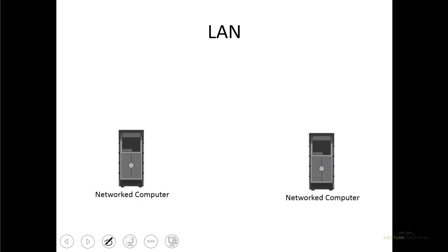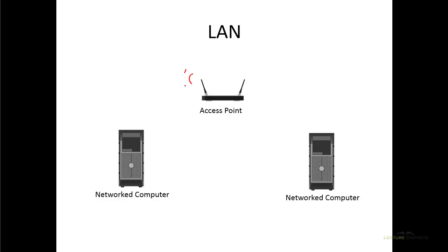We can also introduce wireless instead of using the wired option, using a device called an access point to send data wirelessly. Again, for those at home, your router typically acts as an access point as well. The access point in a business gives us the ability to send data wirelessly from the access point to any wireless-capable device. The standard for local area networks when it comes to wireless is called Wi-Fi, which is typically written as 802.11 followed by a letter depending on the speed and capabilities. That's the technology we use wirelessly for local area networks.